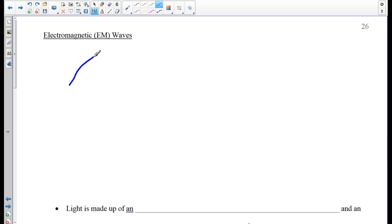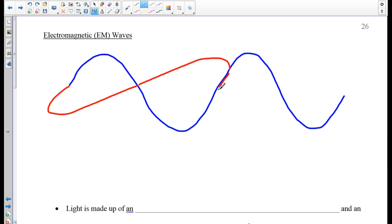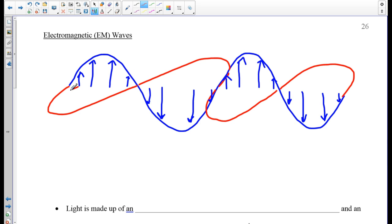Electromagnetic waves are oscillations in the electric and magnetic fields, and we can draw those oscillations using a wave shape. These wave shapes represent force arrows, so we can draw the magnetic arrows in blue, and the electric field, or the electric force arrows, we draw those red.